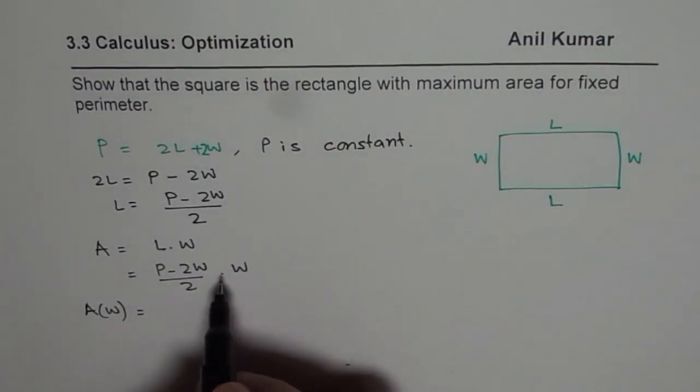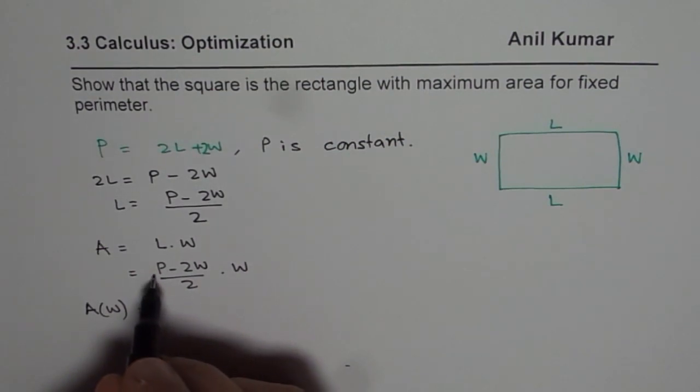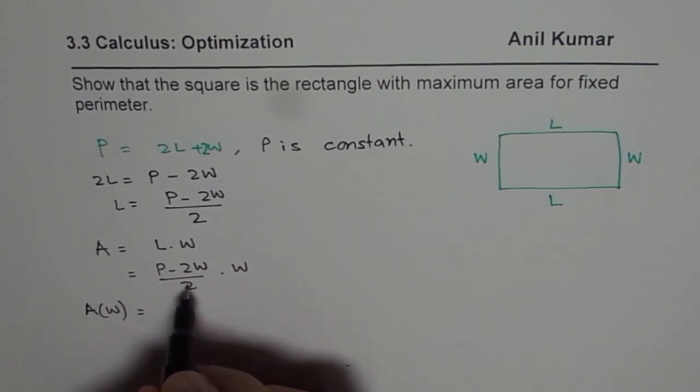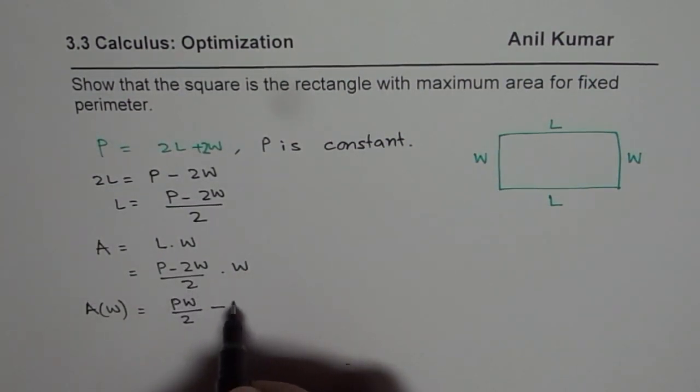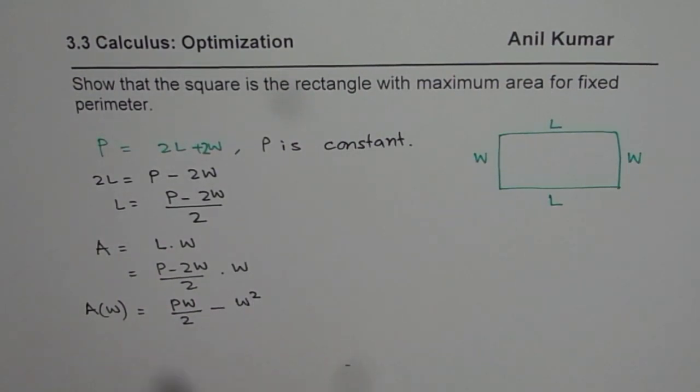Now here, if I multiply this, then what do I get? I get PW over 2, let me write them separately, minus 2 and 2 cancel W square. So that is an expression which we will get.